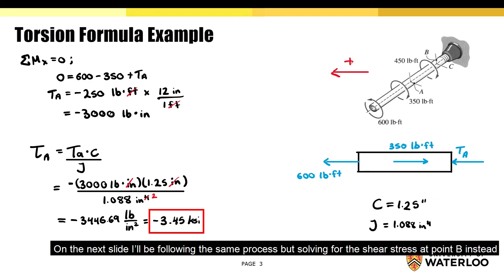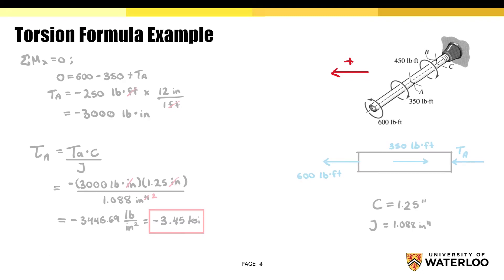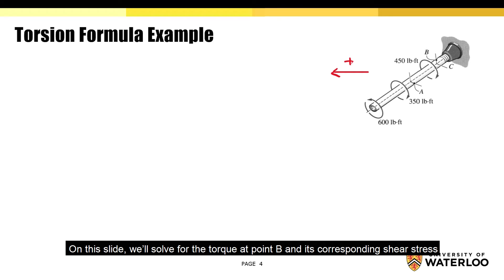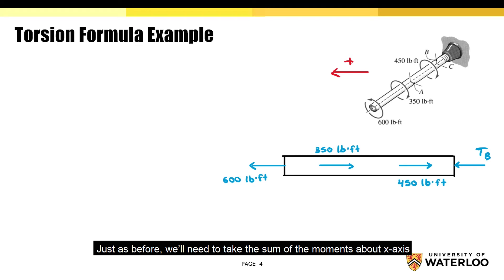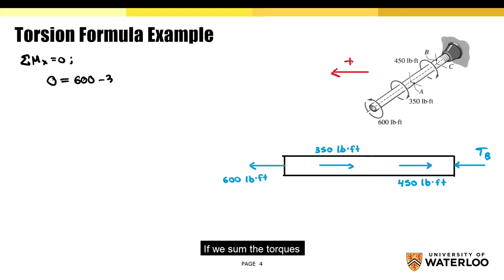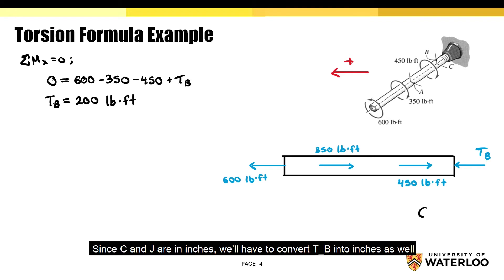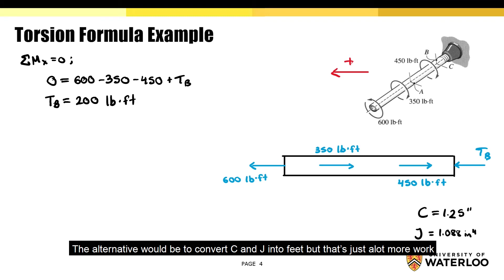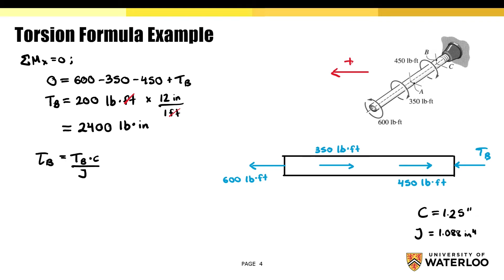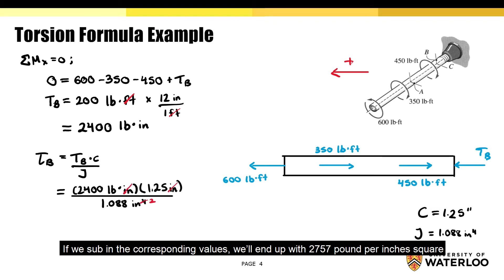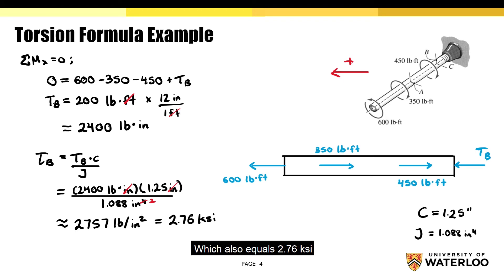Following the same process, we'll now solve for the shear stress at point B. I've drawn the free body diagram from the open end to just before point B. Taking the sum of moments about the x-axis and summing the torques gives 200 pound-foot. Since C and J are both in inches, we convert TB by multiplying by 12 inches per foot, giving 2,400 pound-inches. Substituting into the torsion formula, we get 2,757 pounds per square inch, which equals 2.76 ksi. This is the shear stress at point B.